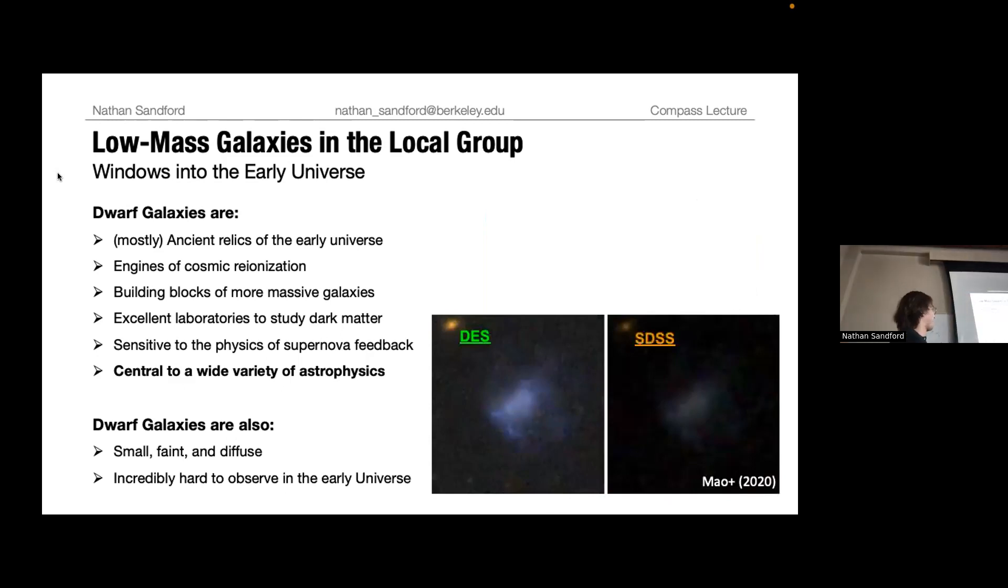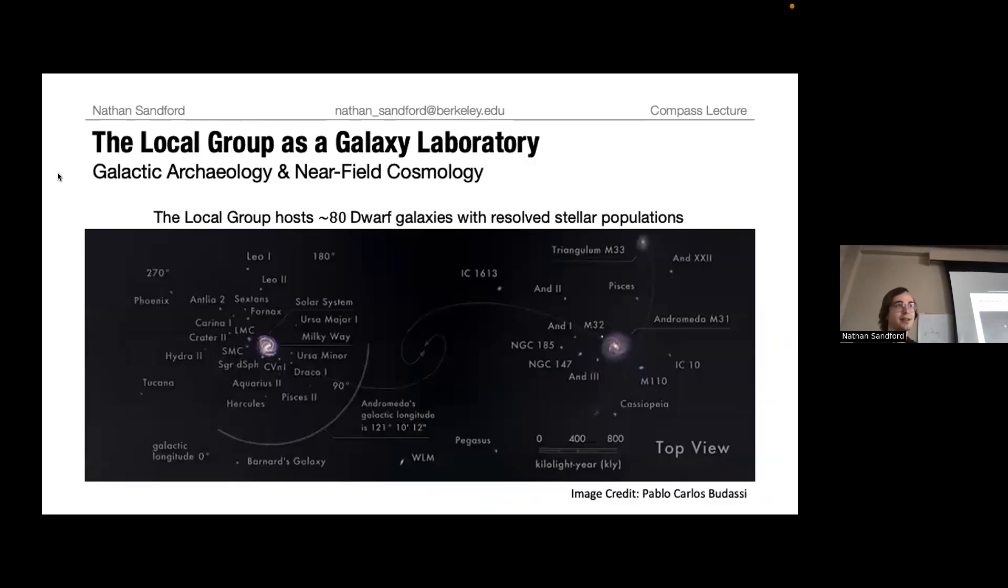For a lot of the reasons that dwarf galaxies are really interesting to study, for many of those reasons they're also very difficult to study. They are small, they are faint, frequently diffuse, as you can see in these images on the right. They just look kind of like smudges. And this is especially true if we look in the very distant universe, into the very early universe, they become incredibly hard to impossible to actually study in any amount of detail.